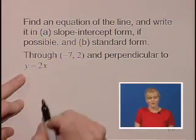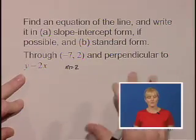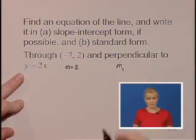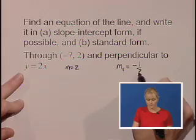So the slope of this given line is 2, so the slope of the line we're looking for is the negative reciprocal. So the slope for the original equation we're looking for is -1/2.